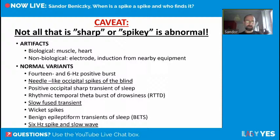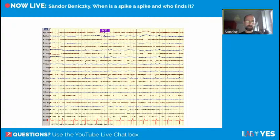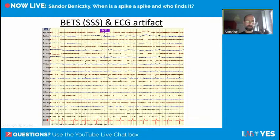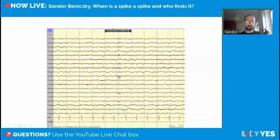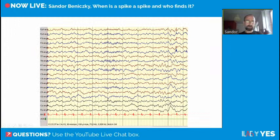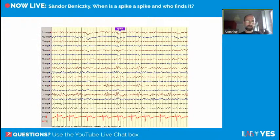Not everything sharp or spiky is abnormal — we have many artifacts, both biological and non-biological, that create spiky or sharp things, plus a long list of normal variants. Some normal variants would not fulfill our criteria: 14 and 6 Hz positive bursts, positive occipital sharp transients of sleep, rhythmic temporal theta bursts of drowsiness, WICKET spikes, benign epileptiform transients of sleep (BETS/small sharp spikes) would not fulfill our criteria. Yet some normal variants would actually fulfill the spike criteria and must be recognized.